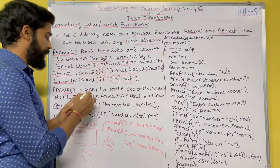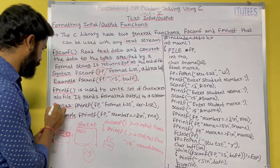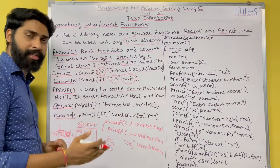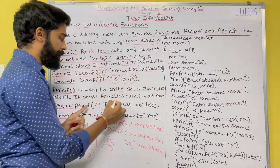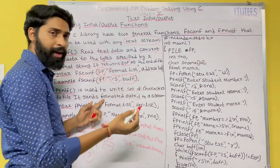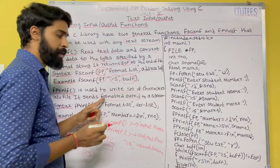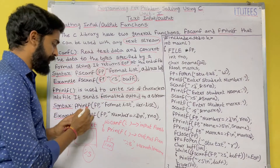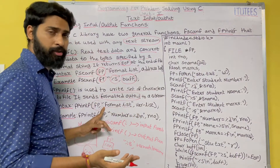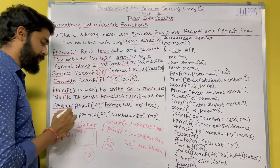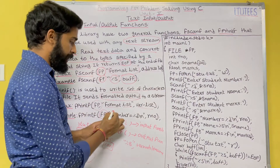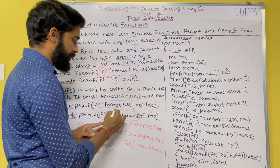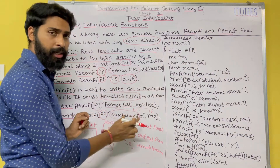Similarly, fprintf is used to write a set of characters into a file. While printf sends data onto the monitor, fprintf sends formatted output to a file. The syntax is: fprintf(fp, format_list, variable_list). For example: fprintf(fp, "number = %d", rollnumber) — where fp is the file pointer. If the roll number is 111, then the string 'number = 111' is stored in the file at the location pointed to by fp.